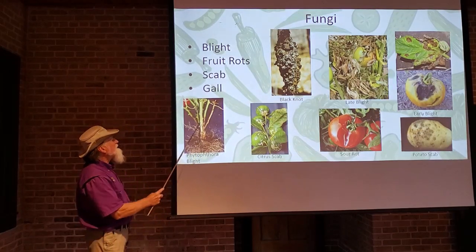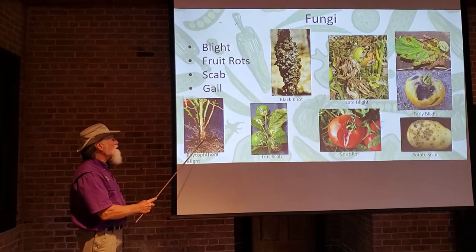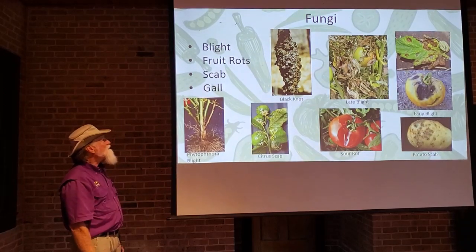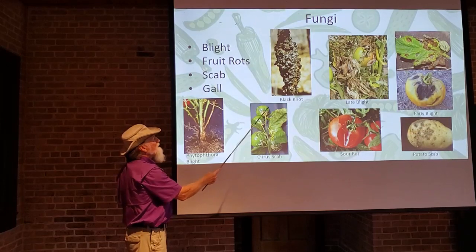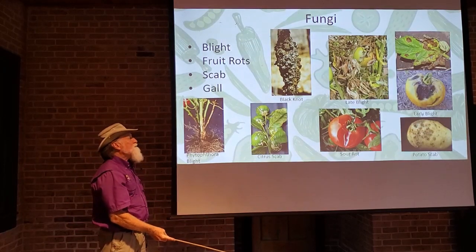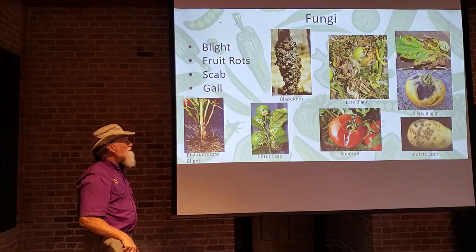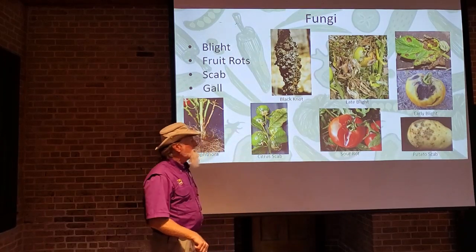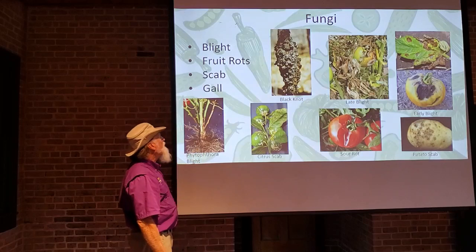Phytophthora blight: this is a soil pathogen infecting the roots — you can see discoloration on the lower stem area. Scab makes warty, rough patches on leaves and fruit — citrus scab makes the fruit perfectly fine inside but covered with lesions outside. Potato scab: you may have seen this when buying potatoes — rough, scabby, warty-looking lesions on the outside surface.